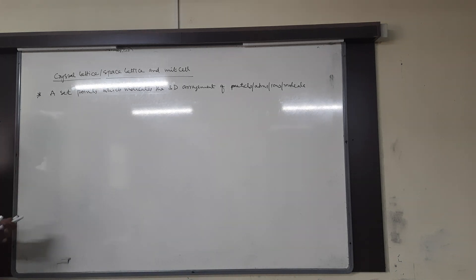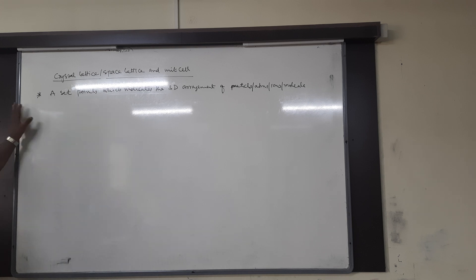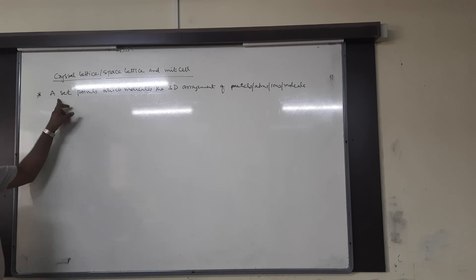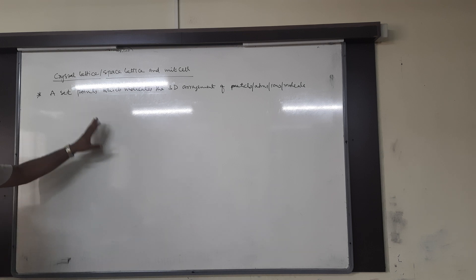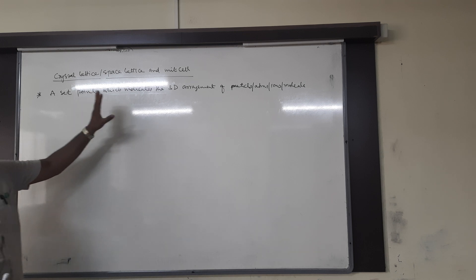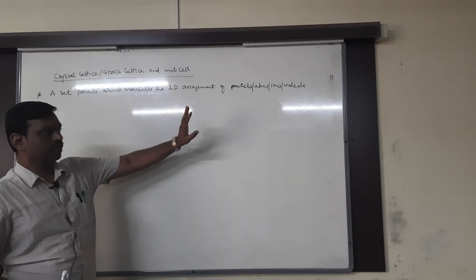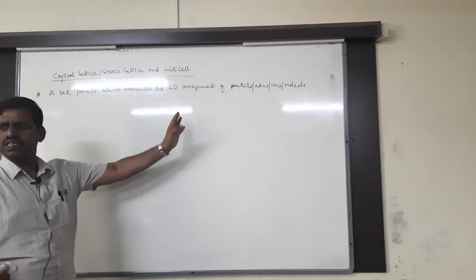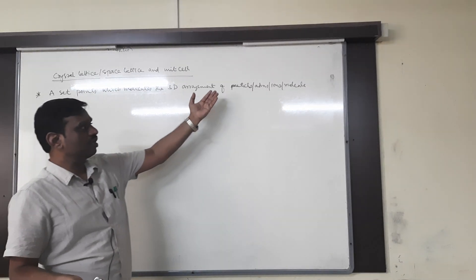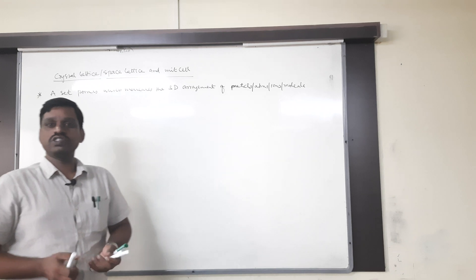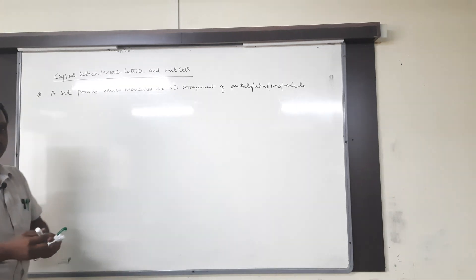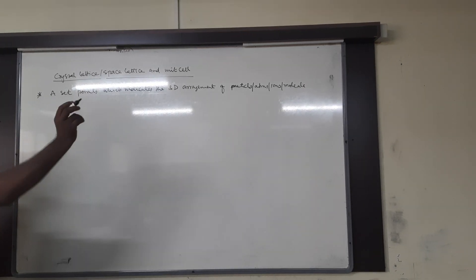Listen first, I will give the notes clearly. First try to understand the definition. A set of points which indicates the three-dimensional arrangement of particles — particles meaning atoms, ions, or molecules — is called crystal lattice or space lattice.